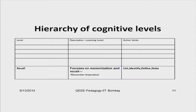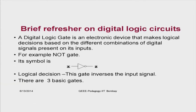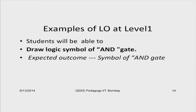The first level is simply the recall level, which focuses on memorization and recall. If you are listing something, defining something, or stating a law, there is nothing additional from the student's point of view — they are just remembering and reproducing. An example learning objective at Level 1 is: 'Students will be able to draw the logic symbol of an AND gate.' The expected outcome is that students reproduce the symbol already taught in the classroom.